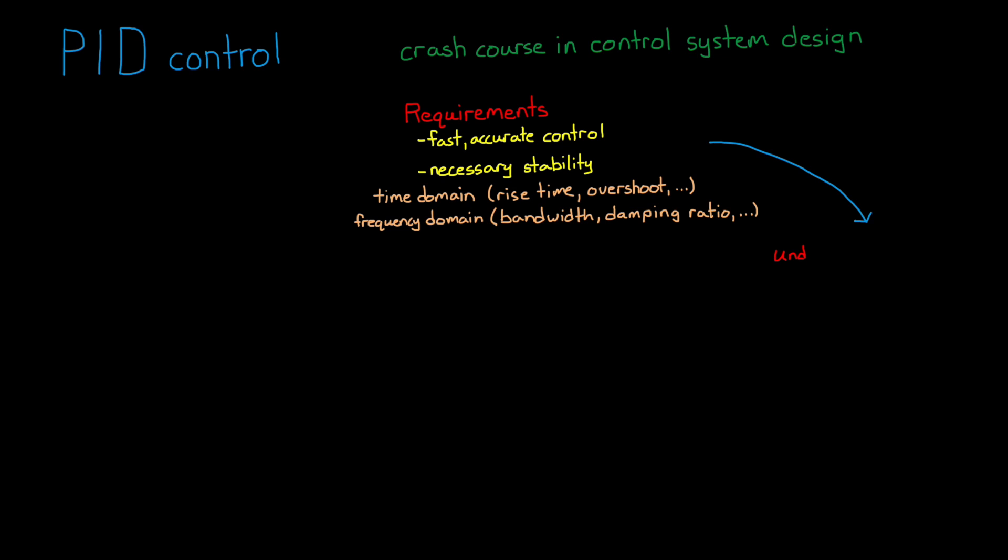Once you know what you're trying to accomplish, the next step is to understand the system that you're trying to control. Is it something that behaves like an integrator, like a motor? In which case you might not need an integrator in your controller. Is the open loop system stable? Is it highly non-linear? Is it non-minimum phase? And so on. Each of these characteristics will affect how you approach choosing an initial controller architecture and how you go about tuning.